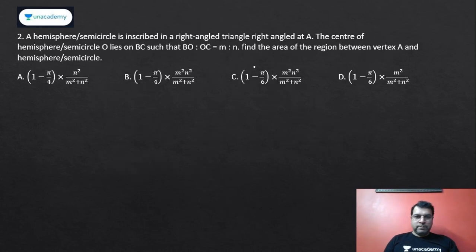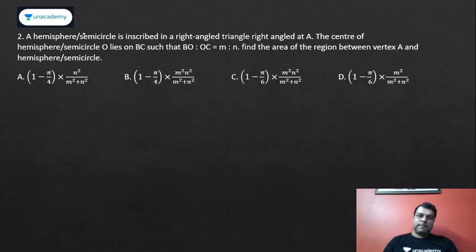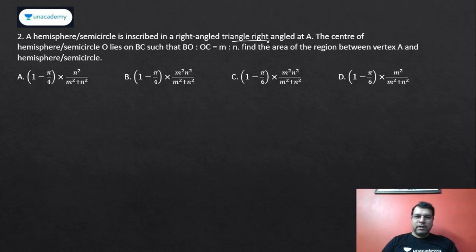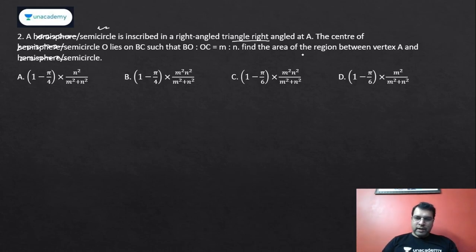Let's move to the second question — it's actually a semicircle. We are talking about a right triangle. A semicircle is inscribed in the right angle triangle. The center O lies on BC such that BO to OC equals m to n. Find the area of the region between vertex A and the semicircle. Since we have m and n in the options, let's safely assume the value as 1:1.